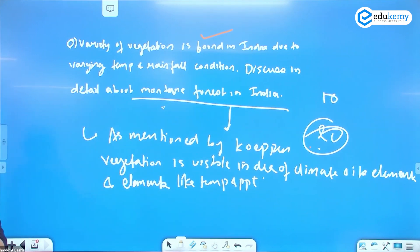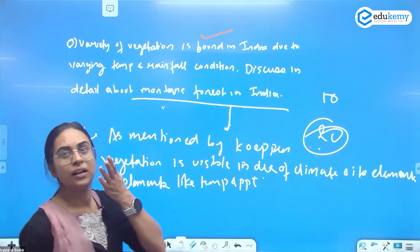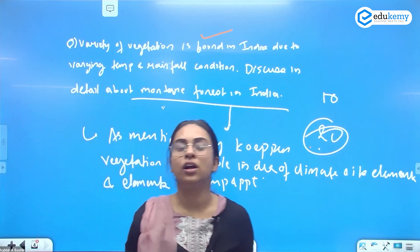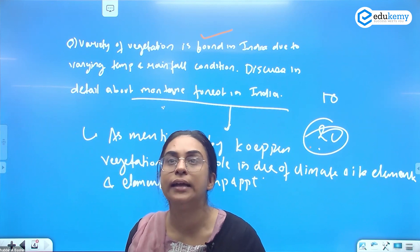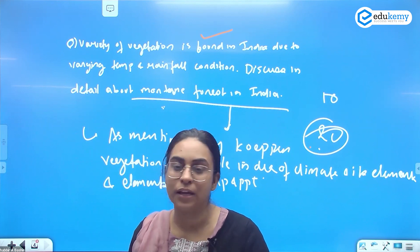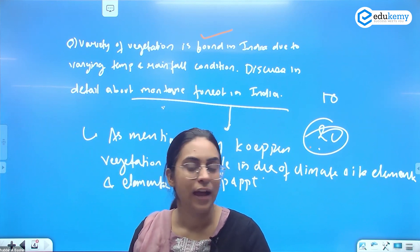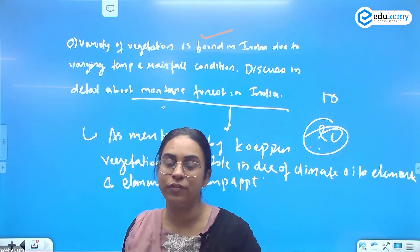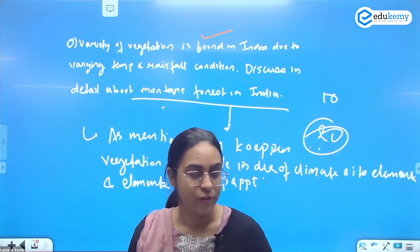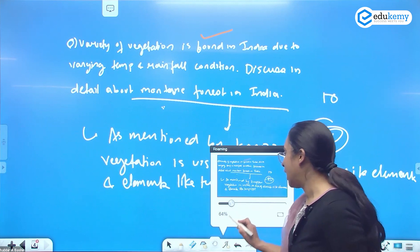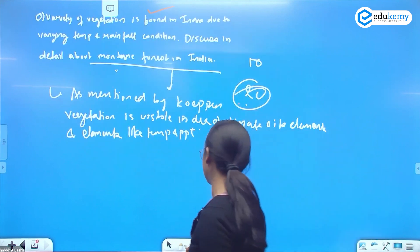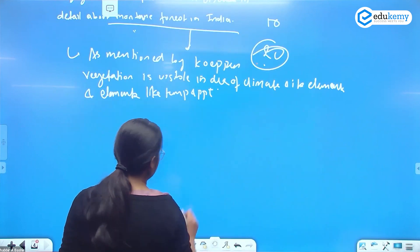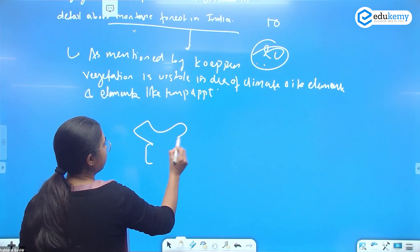I can say that variety of vegetation is found in India, and a vegetation map is a good way to show this. Make a map of India and show how temperature and precipitation are linked to the various types of vegetation. I'll draw the map of India here.